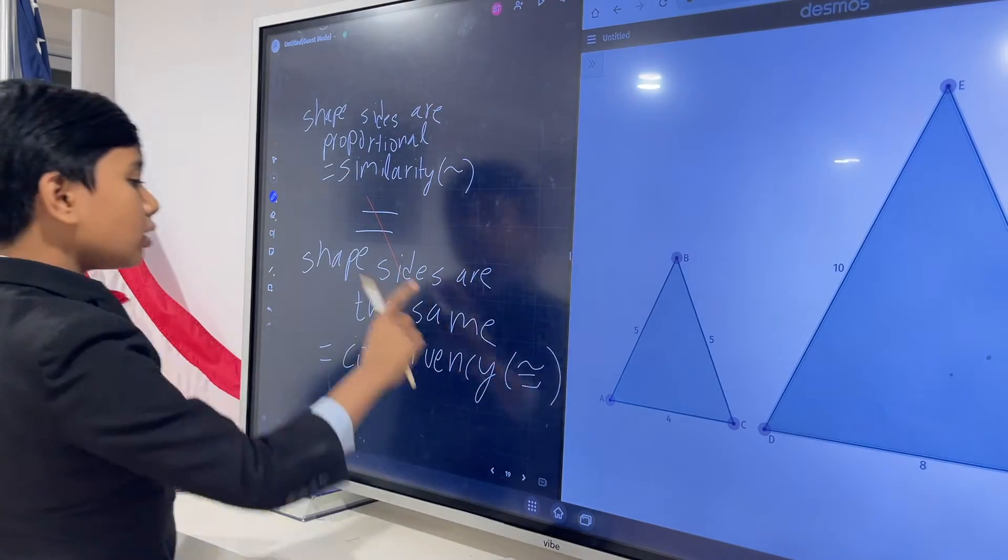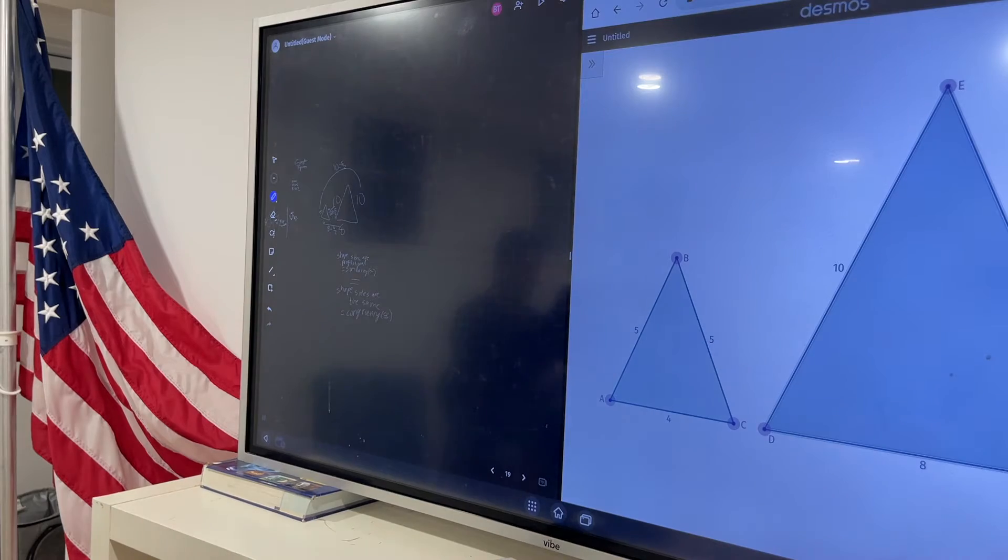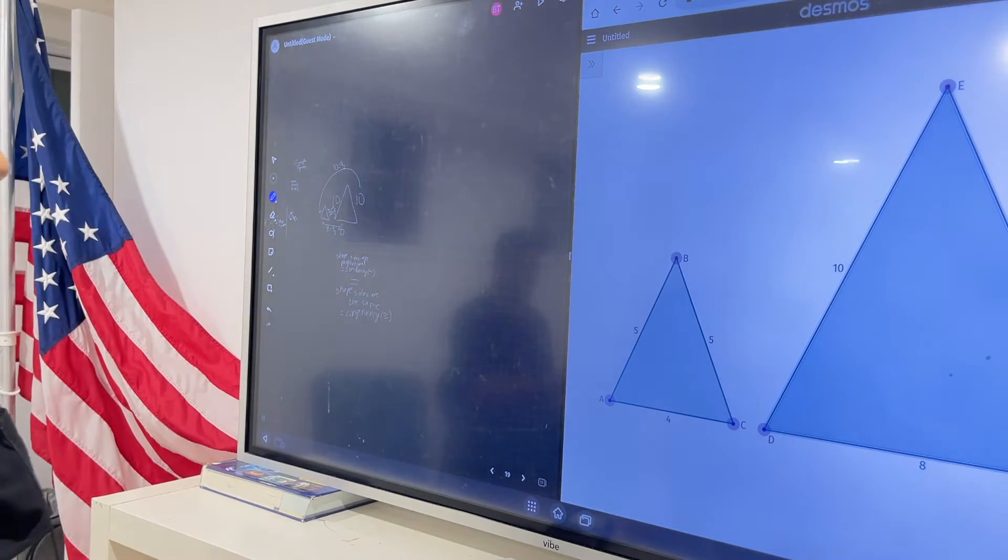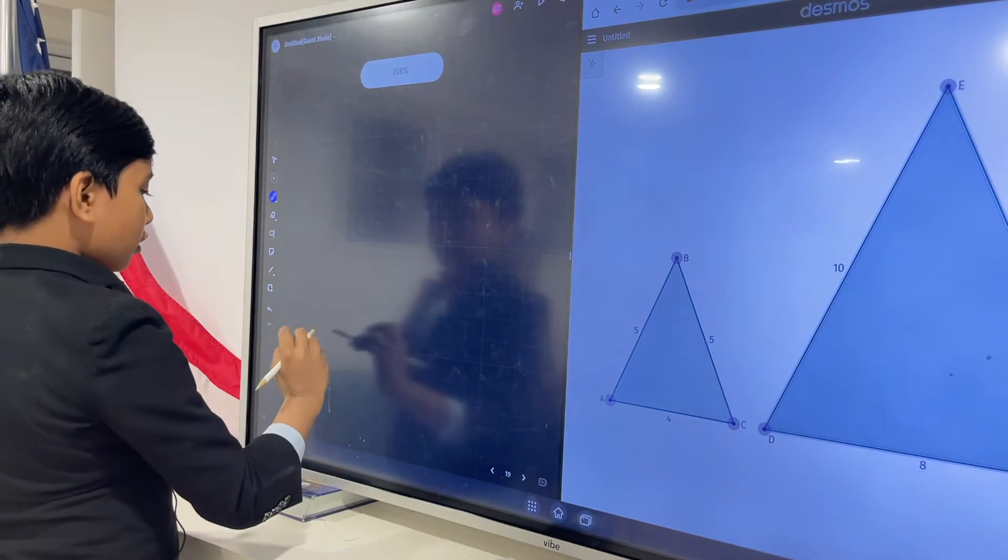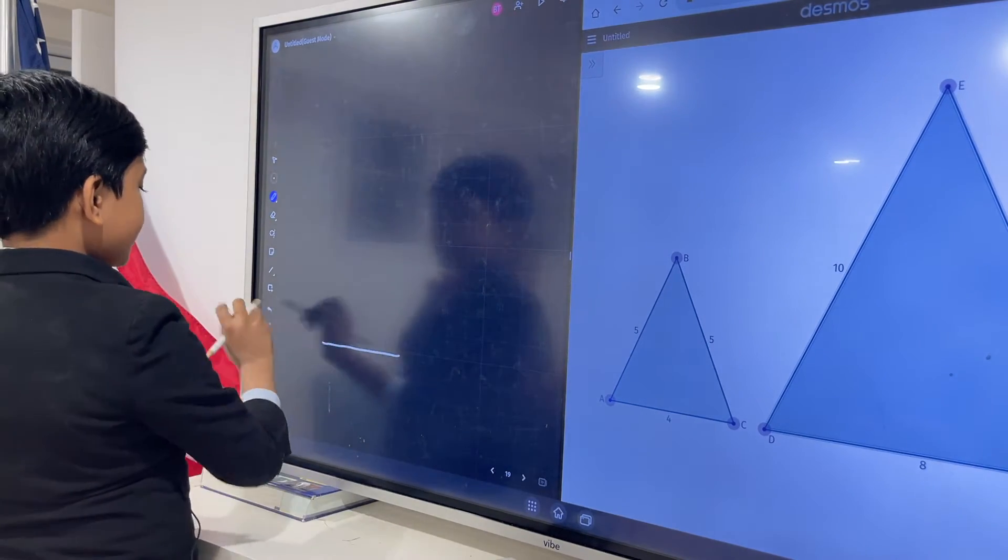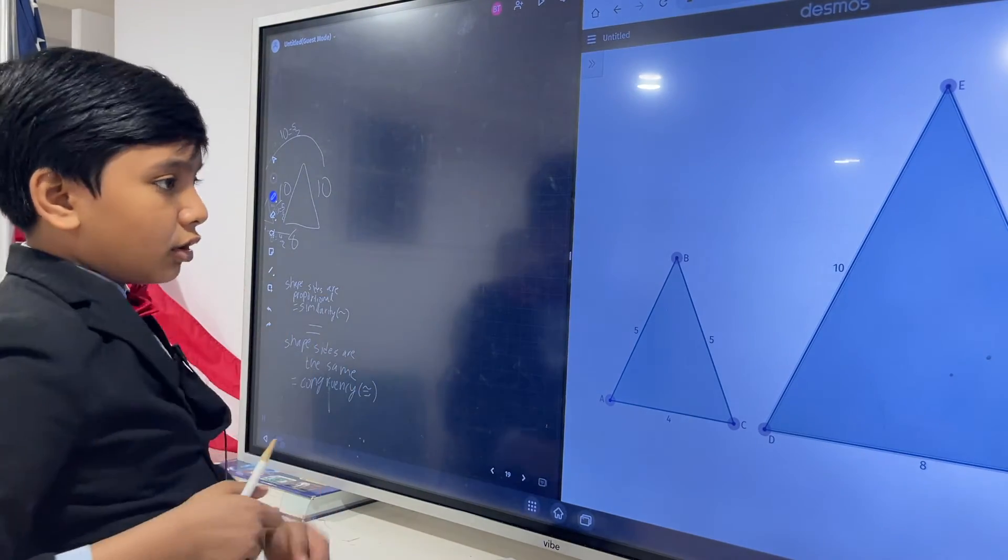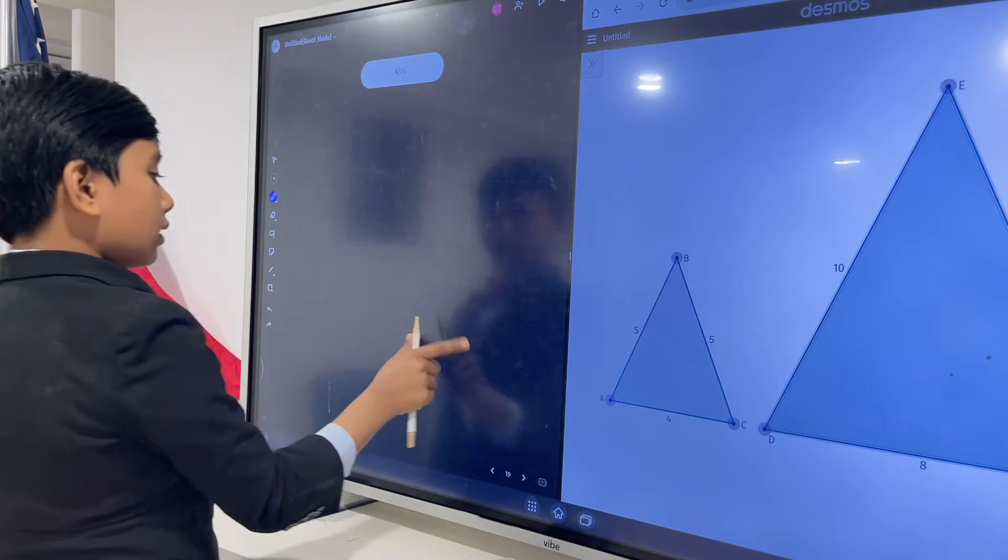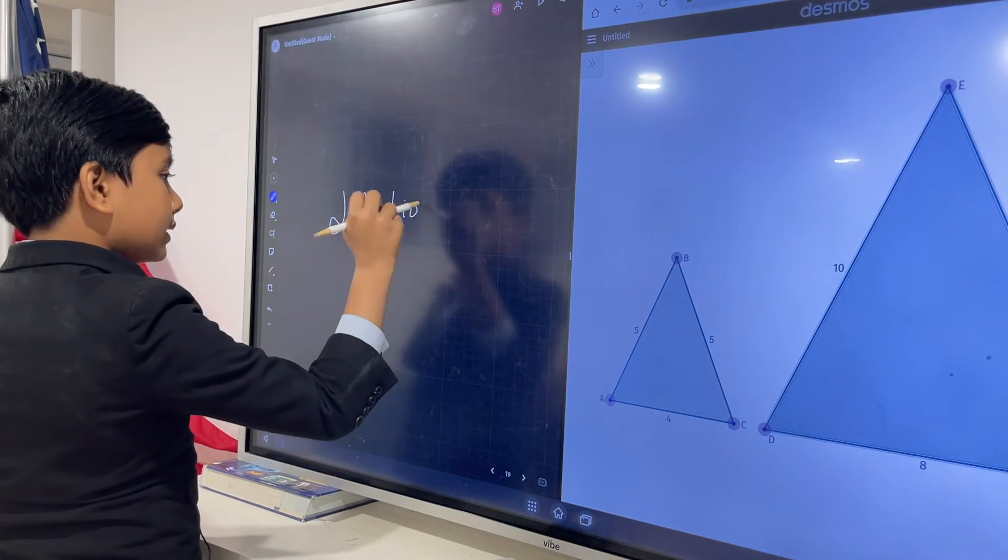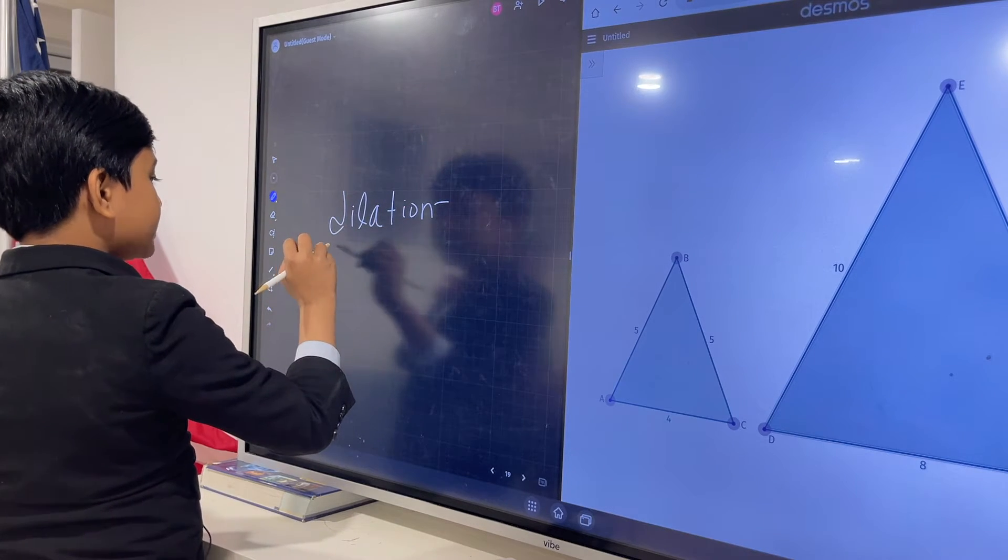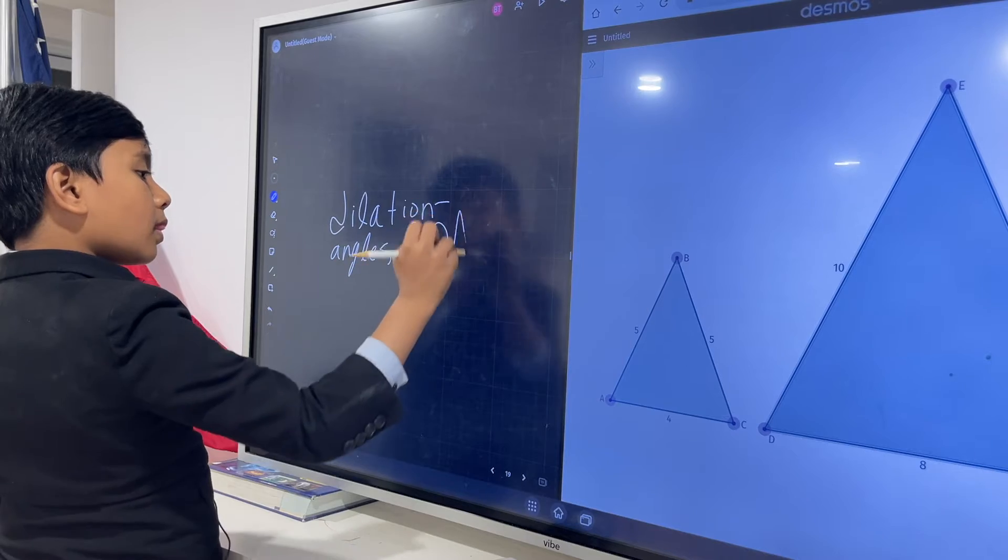However, one very notable thing that we will have to use later is that remember when you are dilating, essentially similar shapes, if these two are similar, you can get one by dilating the other. But remember, dilation means only sides change. Angles don't change.